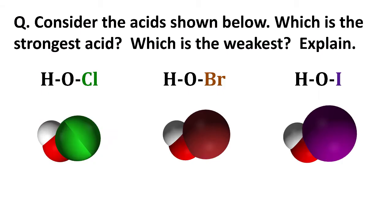To start, let's consider three acids: HOCl hypochlorous acid, HOBr hydrobromous acid, and HOI hydroiodic acid. And the question is, which one is strongest, which is weakest, and why?